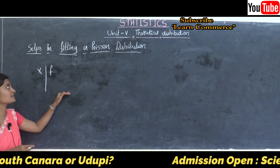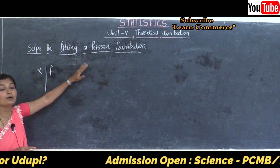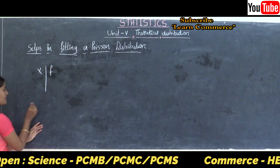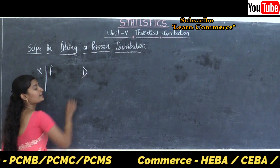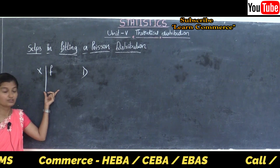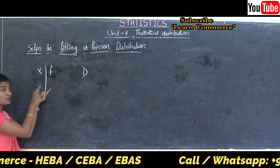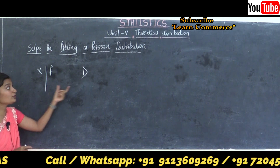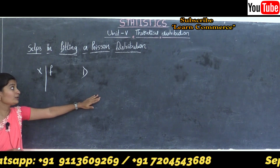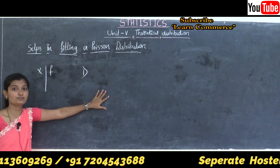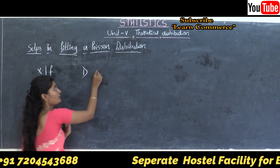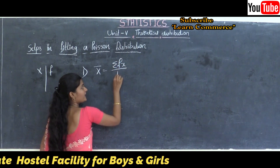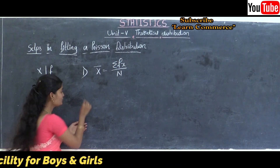To construct fitting a Poisson distribution, there are important steps to be considered. The first step is to calculate the mean of the observed frequency distribution. To calculate the mean of the observed frequency distribution, we use the formula: X-bar equals summation of FX divided by capital N.